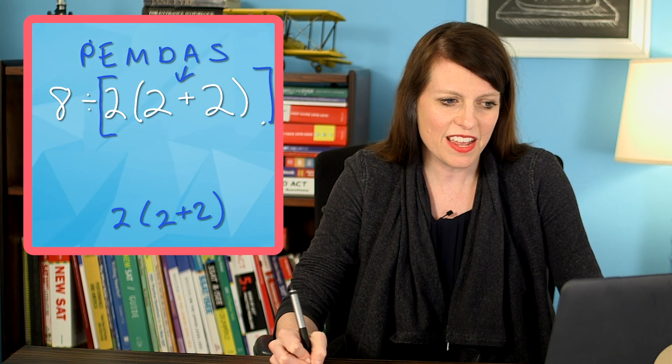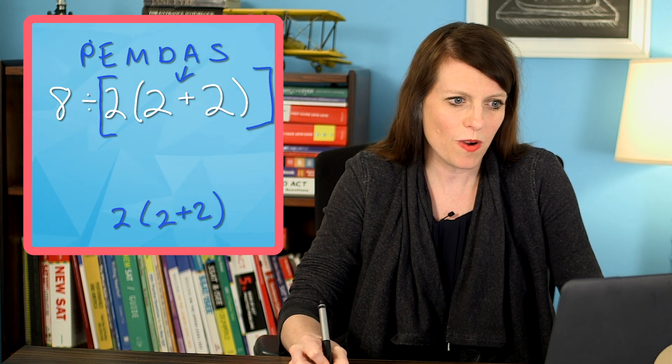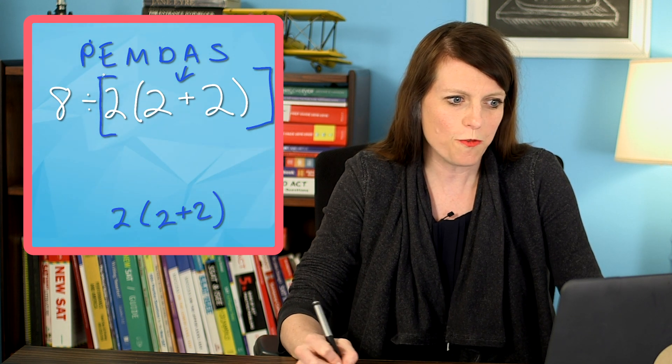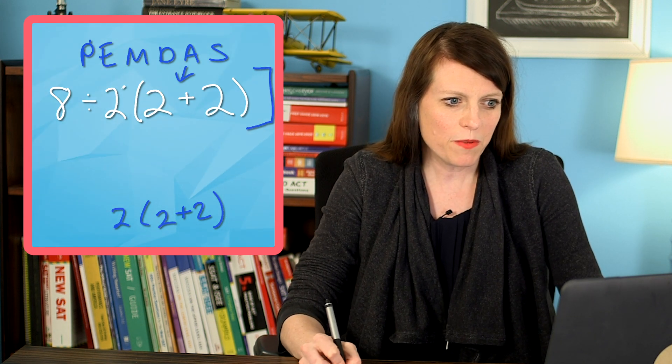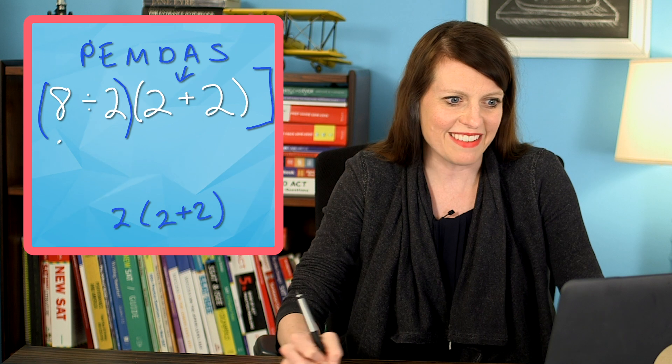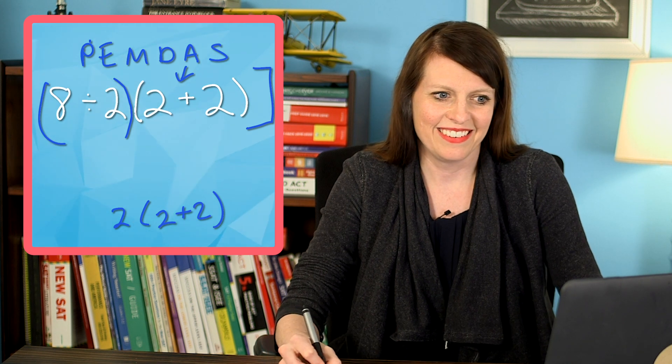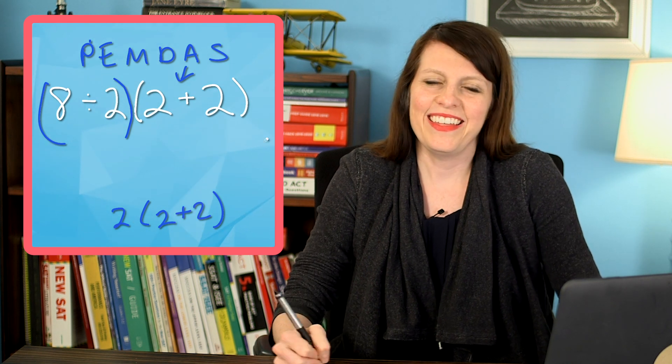If we do want to use that, we make sure it's super clear what we're dividing by what. If we want to divide by this, we write it this way. And if we want to divide by the two first, then we should just do it this way. And then everyone will be happy. My solution is: it needs more brackets, or something, to be clear.